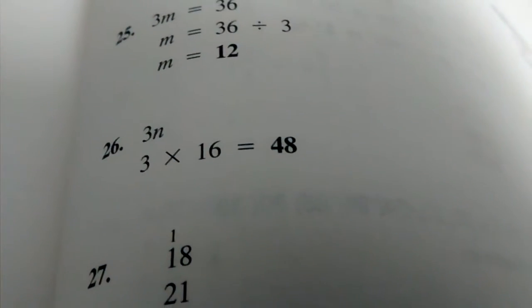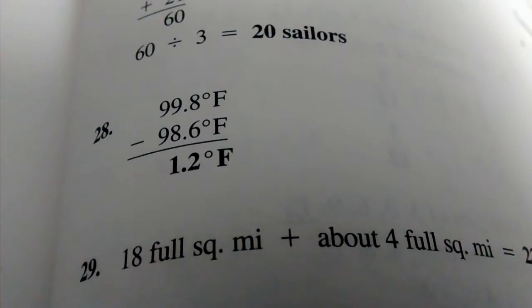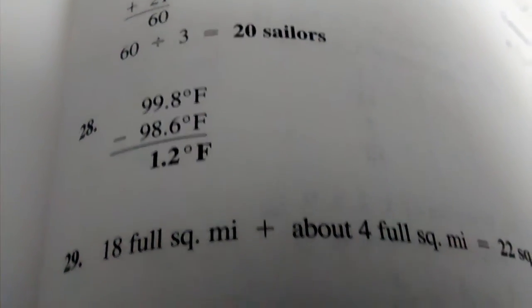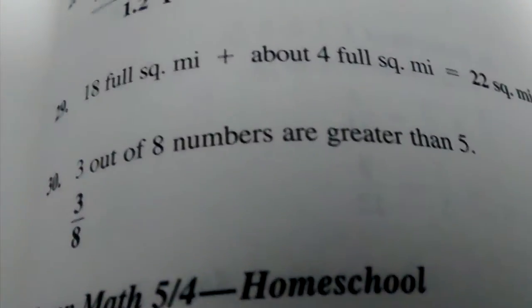Number 26, 48. Number 27, 20 sailors. Number 28, 1.2 degrees Fahrenheit. Number 29, 22 square miles. Number 30, 3/8.